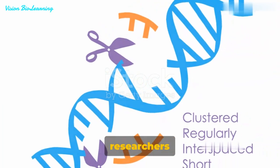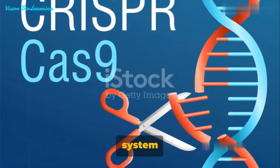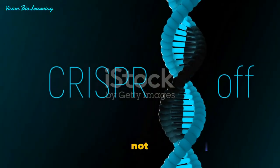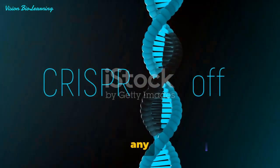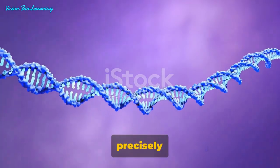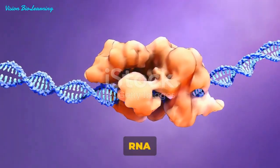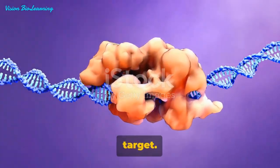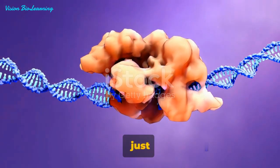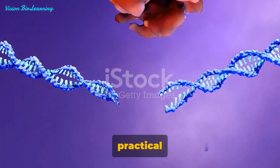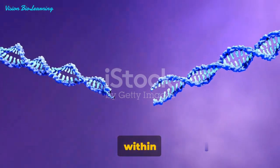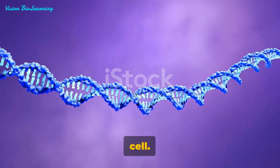In recent years, researchers have realized that this system can be engineered to cut not just viral DNA, but any DNA sequence at a precisely selected location. How? By simply changing the guide RNA to match the desired target. This is not just a theoretical process in a test tube, but a practical one that occurs within the nucleus of a living cell.